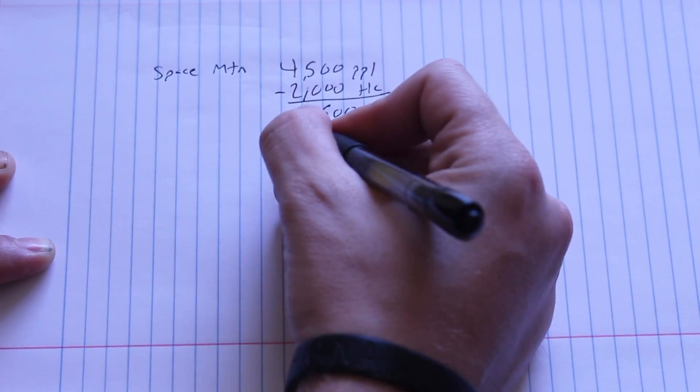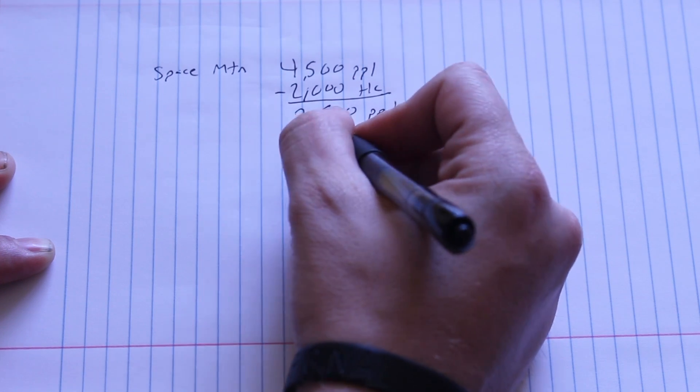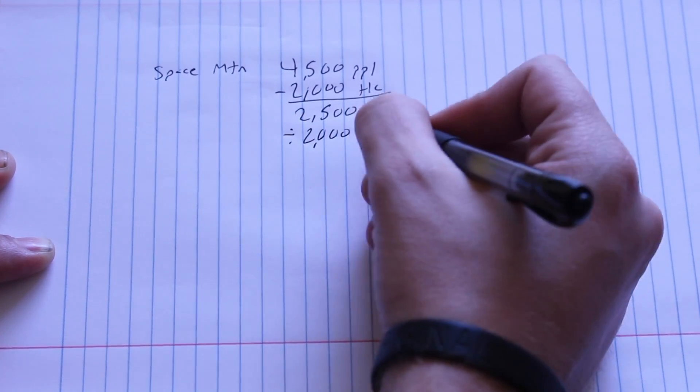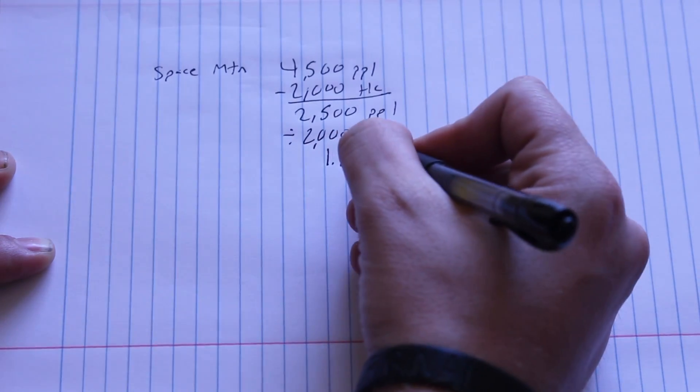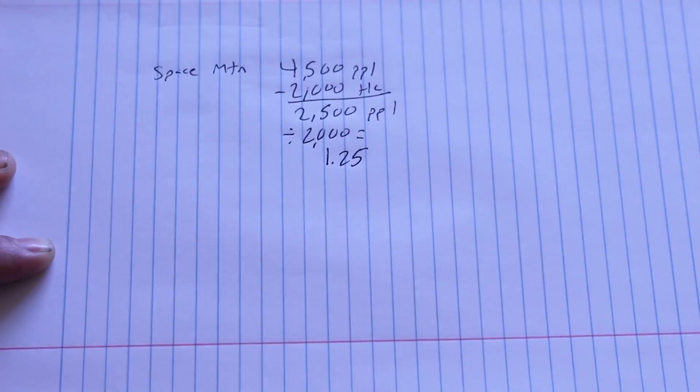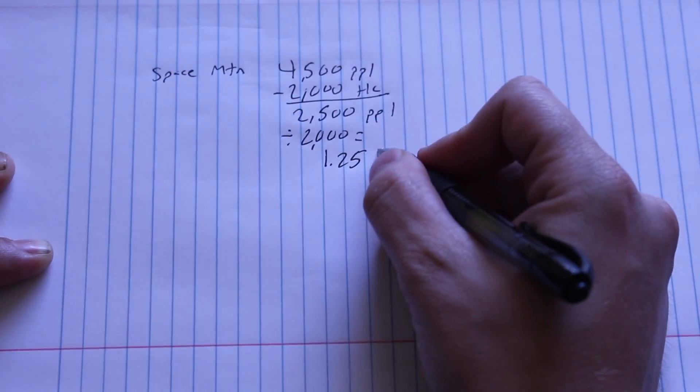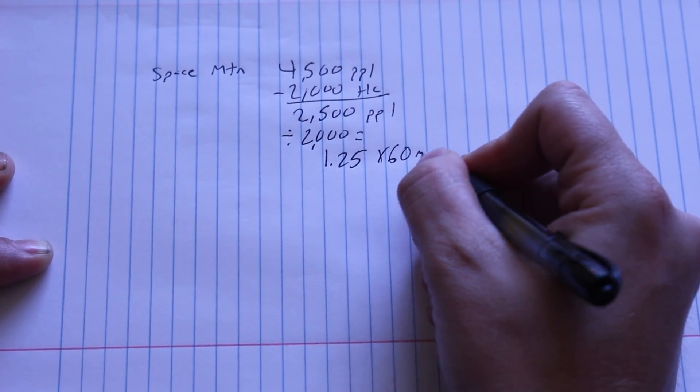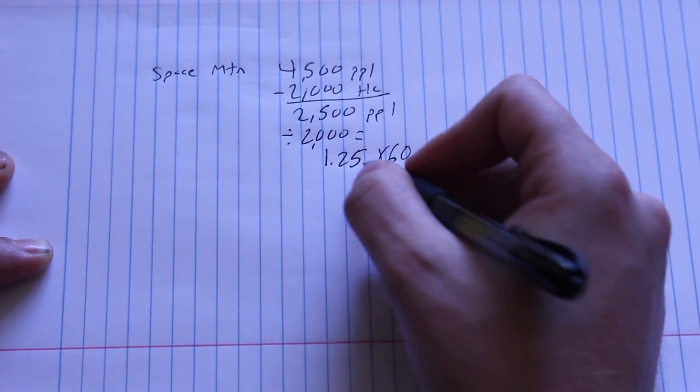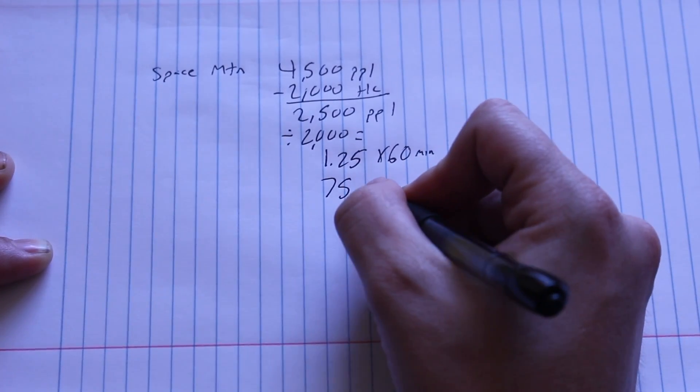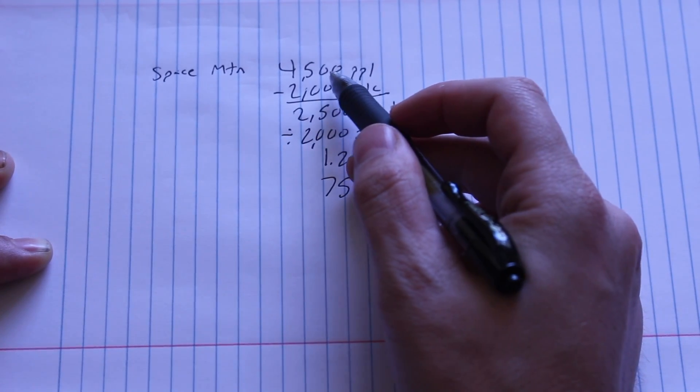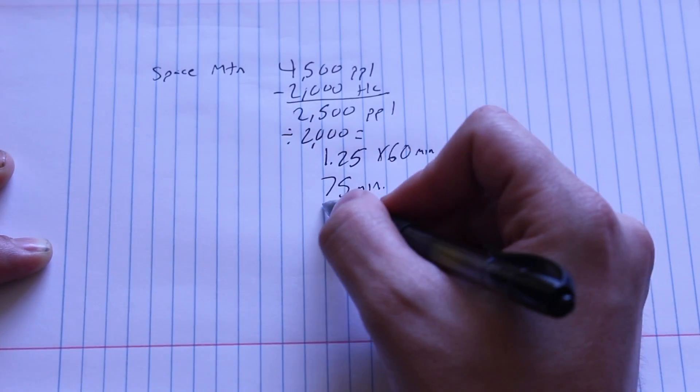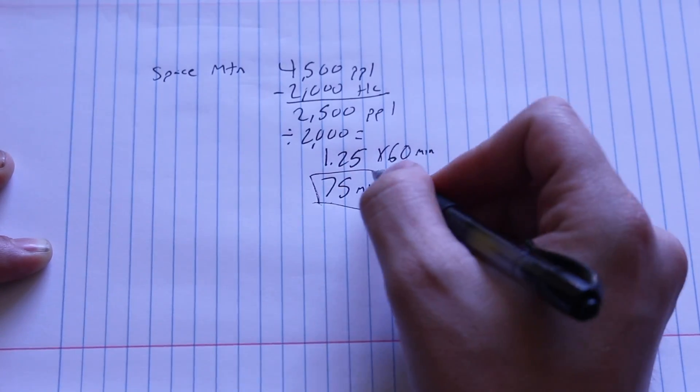We know that our capacity is 2,000, so 4,500 minus 2,000 leaves us with 2,500 people that need to wait in line. Then we take this and divide it by the hourly capacity, which is 2,000. When we do that, we end up with 1.25. Then you multiply this by 60 to convert it to minutes. You end up with 75 minutes for wait time. That means if 4,500 people want to ride Space Mountain in one hour, you'll be waiting 75 minutes.